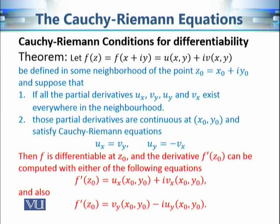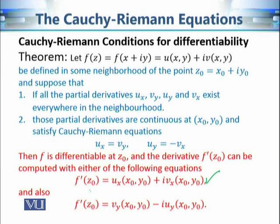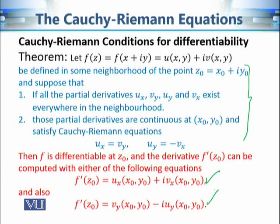If all these conditions are satisfied, then the function is differentiable at point z₀ and the derivative can be calculated using either of the following expressions: f′(z₀) = u_x + i·v_x evaluated at (x₀, y₀), or f′(z₀) = v_y − i·u_y evaluated at (x₀, y₀). We can use either expression to find the derivative, but only after confirming the conditions are satisfied.